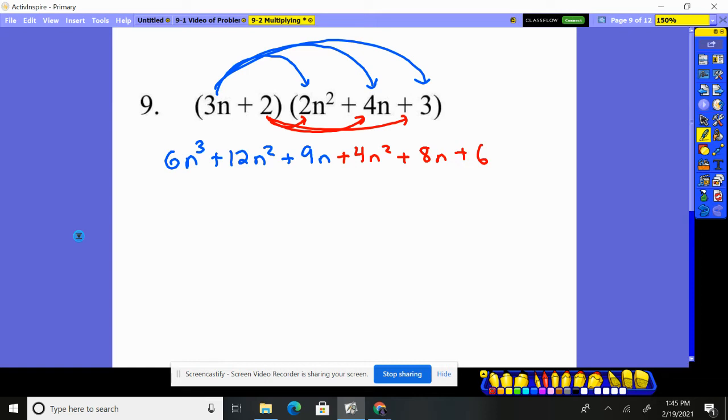Notice we have six pieces here. Two can go together. Six n cubed is by himself. Twelve n squared plus four n squared gives you sixteen n squared. And then nine n plus eight n is 17n. And then you simply have the number six. So there's our answer.